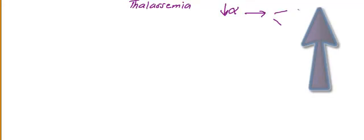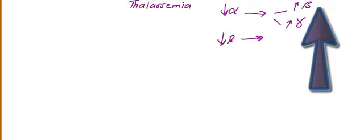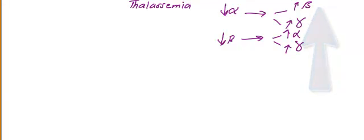In thalassemia, the important principle is: if you have decreased alpha chains, what is left in the blood is more beta chain and more gamma chain. If you have decreased beta chain, what is left in the blood is more alpha chain and more gamma chain.